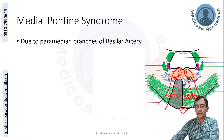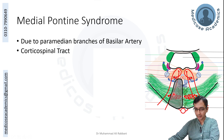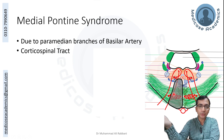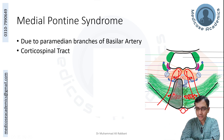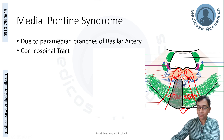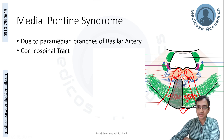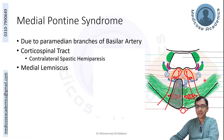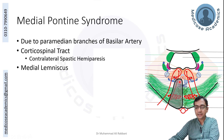One by one, pick up the structures that are affected. First, the corticospinal tract: it is the upper motor neuron that controls the contralateral limb muscles, so loss of it leads to upper motor neuron type paralysis — contralateral spastic hemiplegia. Why contralateral? Because at the level of the pons we are well above the decussation of the corticospinal tract, which crosses the midline at the junction of medulla and spinal cord. So there is contralateral spastic hemiparalysis.